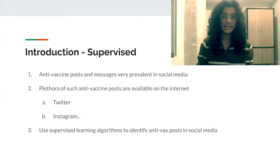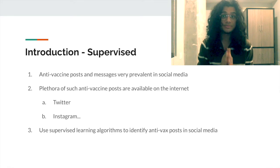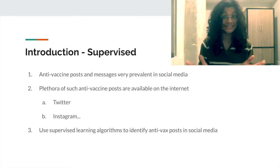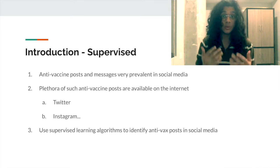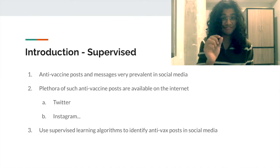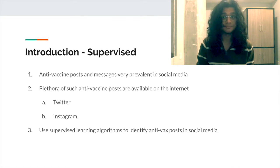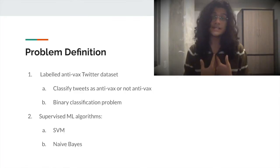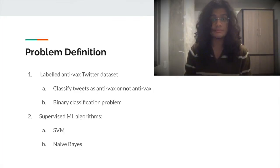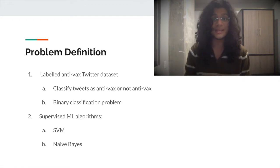The ongoing COVID-19 pandemic has resulted in a lot of false information being spread across the internet, especially many anti-vaccination posts. We wish to use supervised machine learning to identify these anti-vaccine messages on social media, and train machine learning models such as a support vector machine and a naive Bayes classifier to classify a tweet as anti-vaccine or not.